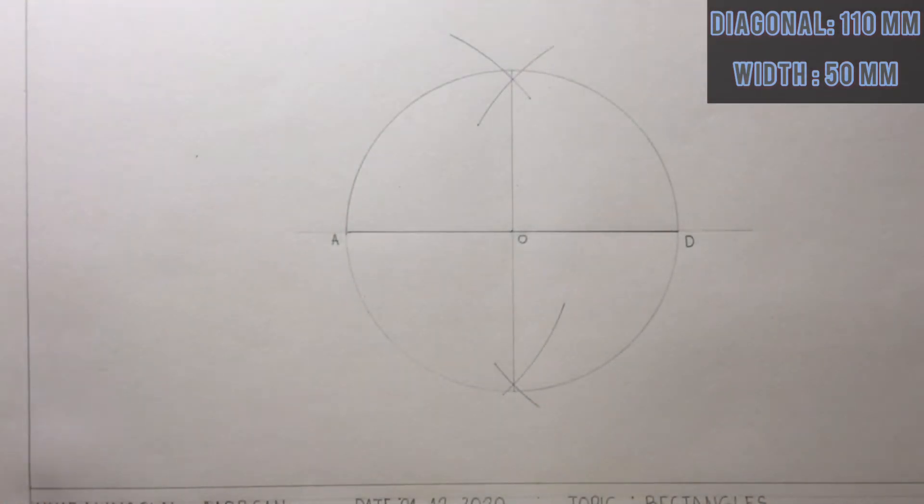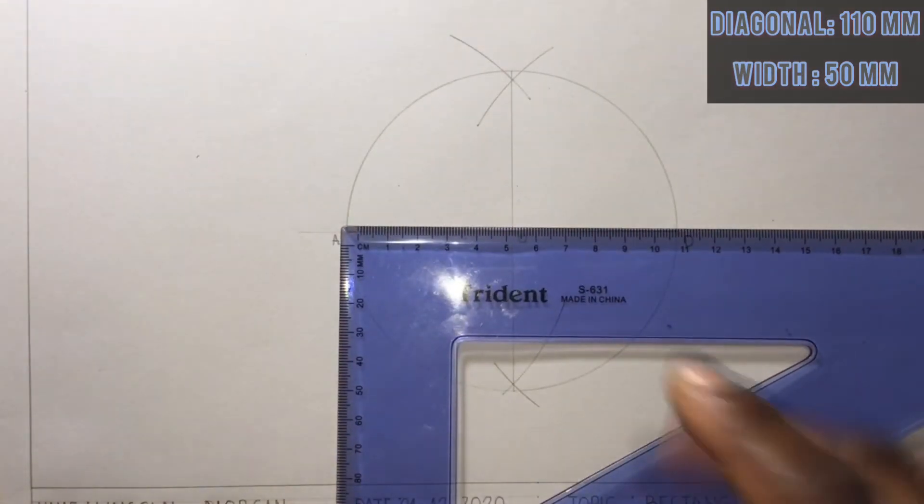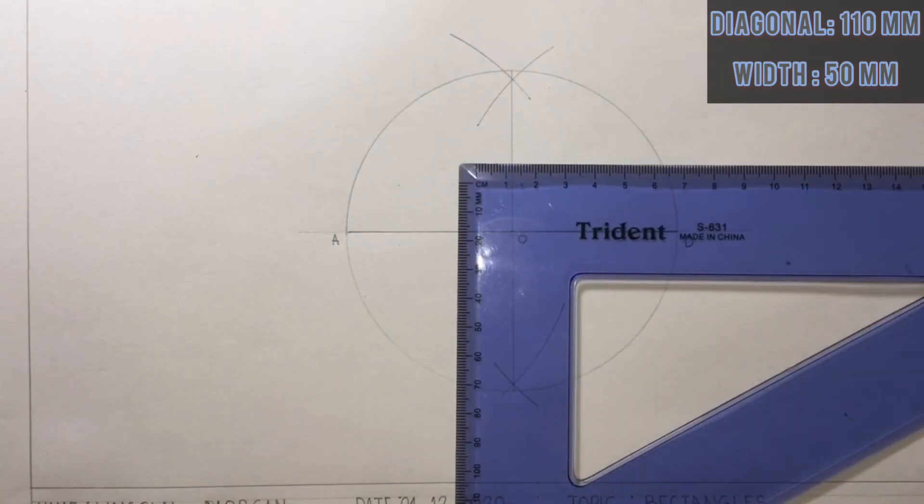I will now open my compass to 50 millimeters, which is the width of the rectangle.